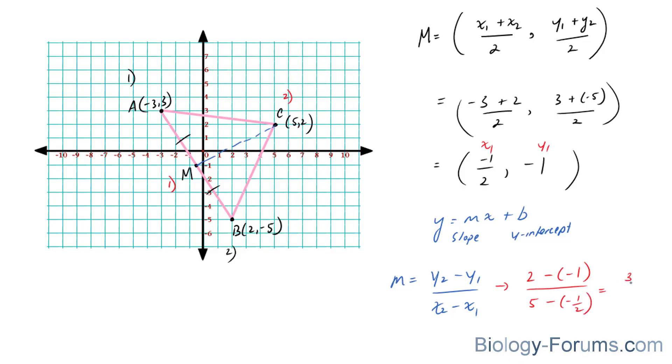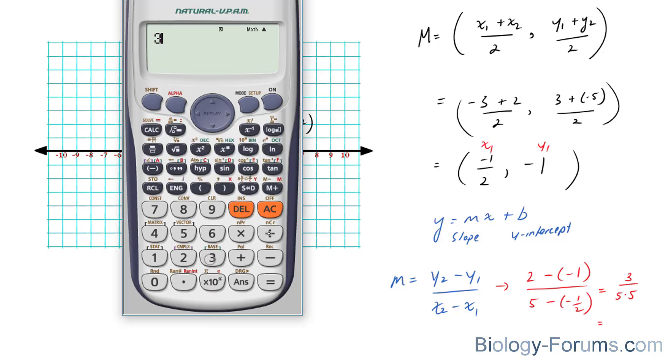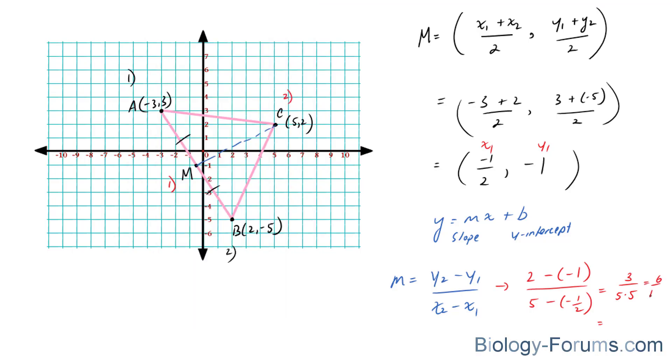2 plus 1 is 3 over 5 plus half. Two negatives make a positive, is 5 and a half. And that is equal to, in fraction form, 6 over 11.